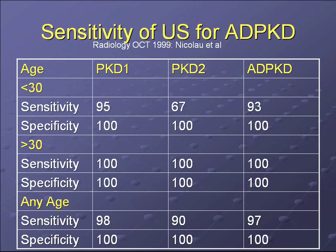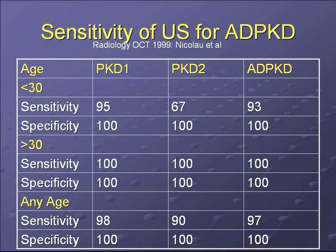An interesting study in radiology examined the sensitivity of ultrasound for polycystic kidney disease. Using genetic testing as a reference standard for patients at 50% risk, a single ultrasonographer applied the criteria developed by Ravine. They found that ultrasound has very good sensitivity and specificity, particularly when patients are above the age of 30. Overall for PKD1 and PKD2, sensitivity was 97% and specificity was 100%. It's also an excellent test because it doesn't expose the patient to radiation and it's inexpensive.